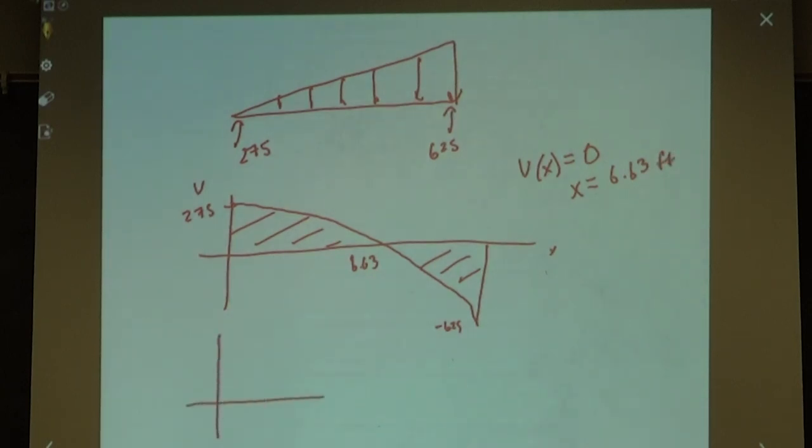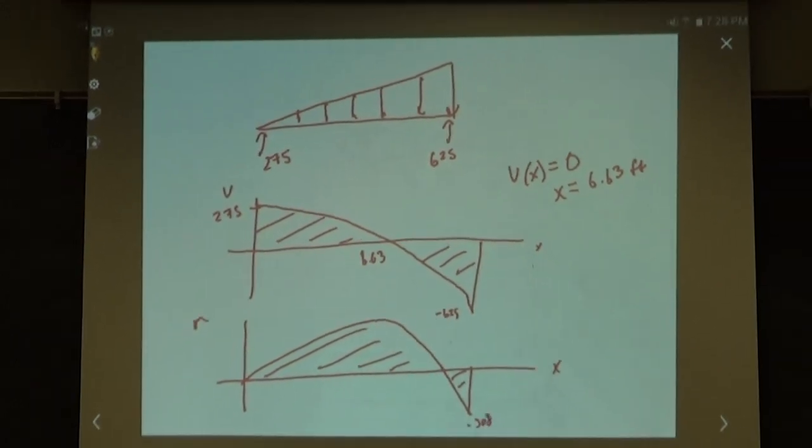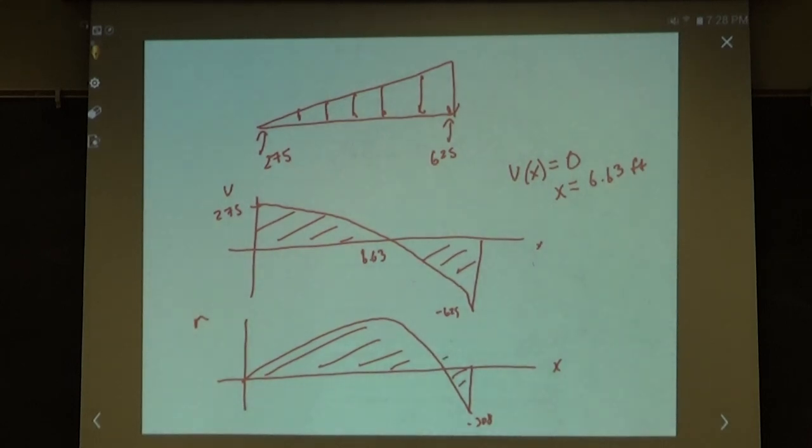Our shear diagram starts at 275. We're parabolic down all the way to negative 6.25. You can find where this crosses zero at 6.63 by setting your V of X equal to zero. Our moment diagram, we're parabolic up, we hit a max, then we drop down. This value is negative 308, crosses at negative 11.5, and this top value is 12.60. I'll challenge you to figure out how we got these values from your moment equation.